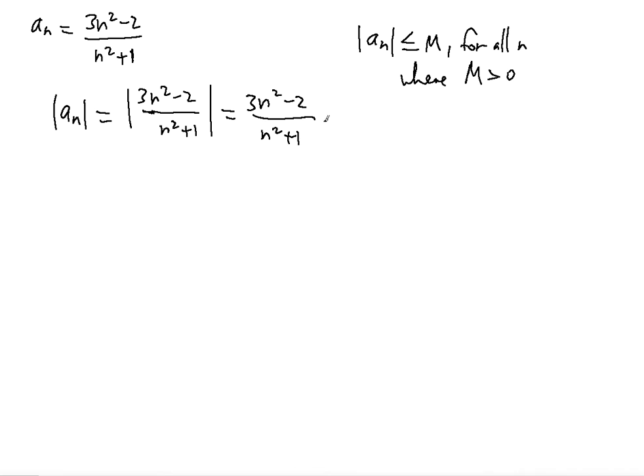And now notice that this is going to be less than 3n squared over n squared plus 1. Why? Because if you add 2 you will make the numerator bigger.